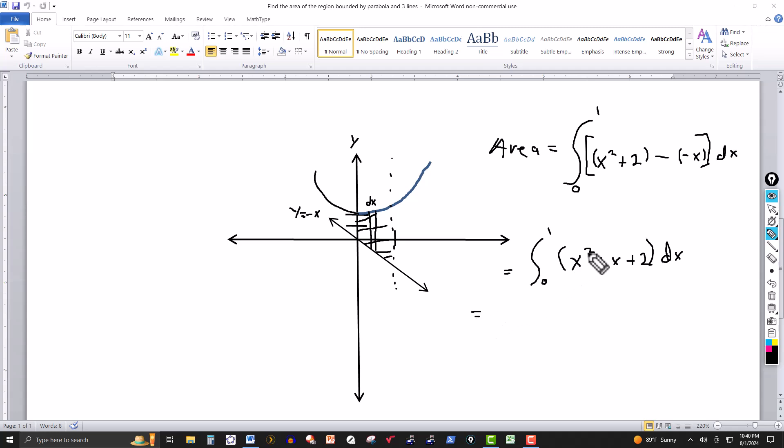We add 1 to the exponent and then divide, so it would be x to the 3rd over 3, term by term here. Plus, the exponent on the x is 1, so we add 1 to that, giving me 2, so it gives me x squared, and I divide by that, which would be 2. Integrating 2 with respect to x, it's just 2x, and then we evaluate at the limits of integration, which would be 0 to 1.